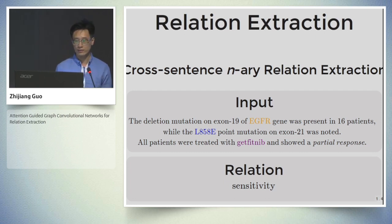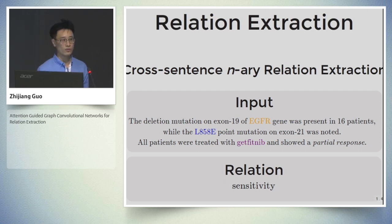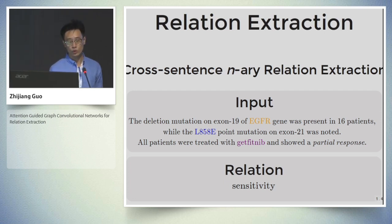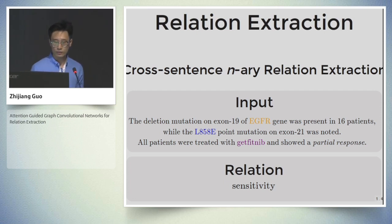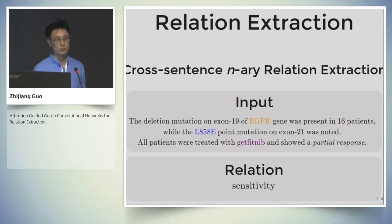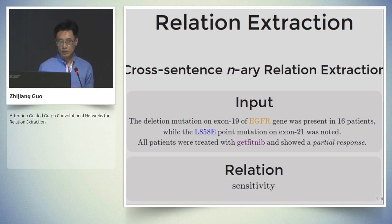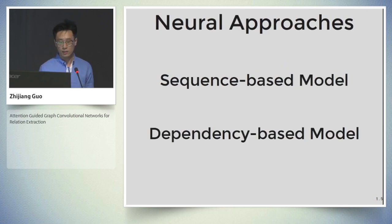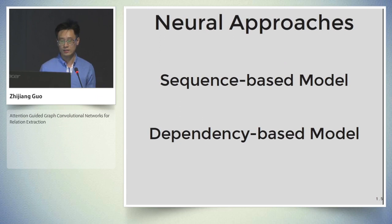For the cross-sentence n-ary relation extraction, the input consists of multiple sentences together with n given entities. n can be larger than two — here the number is three. The first entity refers to a certain gene, the second entity refers to the mutation point, and the third entity refers to a certain drug. As the last sentence states, all patients were treated with this drug and showed a partial response, which indicates a sensitivity relation among these three entities.